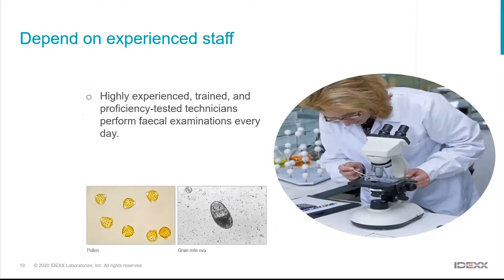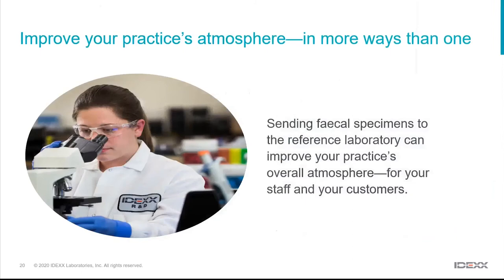From clinical experience, interpreting faecal floats can be difficult — pollens or grain can resemble parasites, and sometimes parasites may just be passing through. For example, a dog that has gotten into a cat's litter tray may have feline roundworm eggs passing through but not causing infection. Sending faecal samples to the lab is really a win-win: that unpleasant sample is out of the clinic, staff are happy, and pet owners receive better quality results.